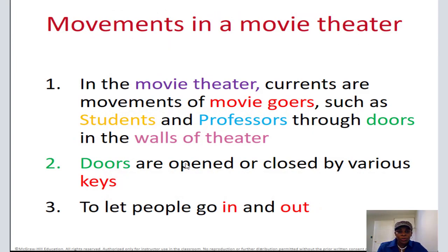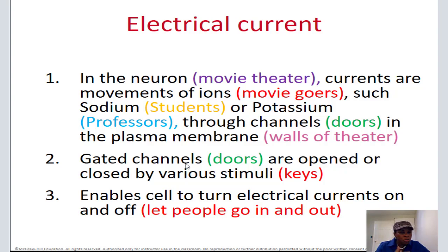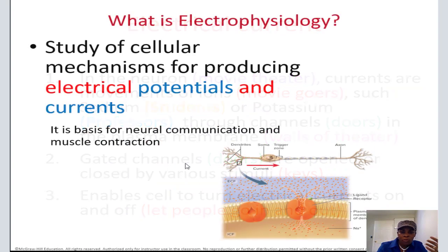To describe the movie theater: currents are a movement of moviegoers — such as students and professors — through doors in the wall of the theater. Those doors open or close by various keys, which let people in and out. That's the whole story of neurophysiology. In the neuron, currents are a movement of ions such as sodium and potassium through channels in the plasma membrane. Those gated channels open by stimuli, which let ions go in and out, creating the current. The current is just the flow of those ions — think of professors and students going in or out.